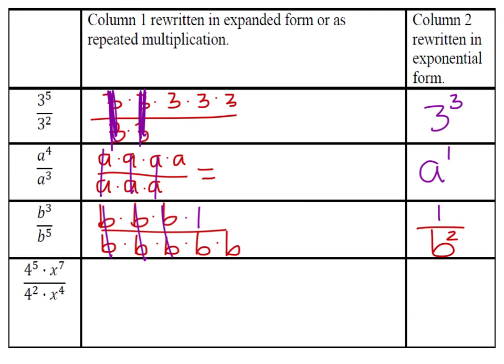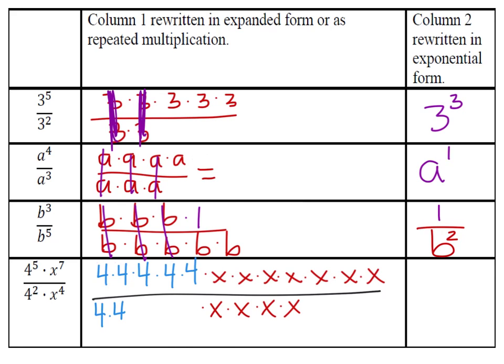Now I'll go ahead and expand this bottom expression here. And we'll go through this one piecewise. So we have 4 to the power of 5, and then we have 7 x's right here like this. And then we'll make this a fraction, divide it by 2 4's being multiplied together, and 4 of these x's. Now we'll cancel out these 4's here, and we'll cancel out 4 of these x's here, and what are we left with? Well, we have 3 of these 4's, and also 3 of the x's as well.